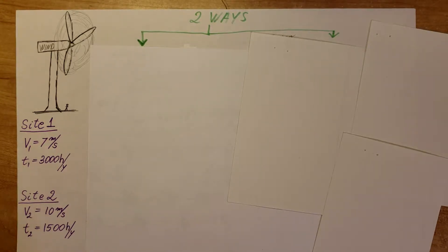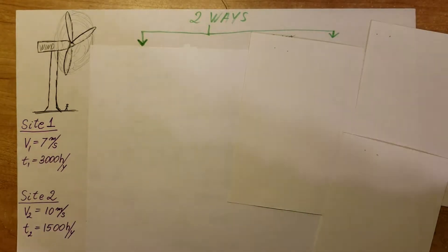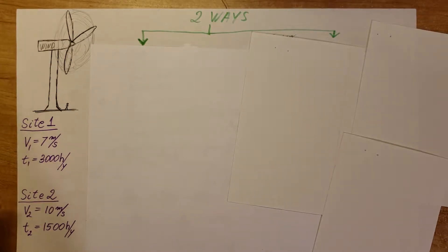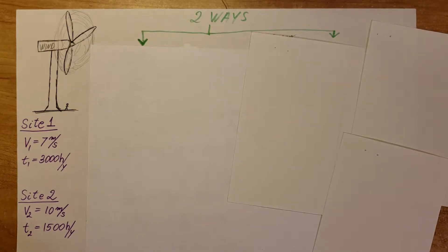This is a thermodynamics problem mixed with a little fluid mechanics. We are interested in the power generation of a wind turbine at two different sites. We know the velocity at both sites and the time at both sites. We are asked to find the total energy generation at both locations and determine which one is better.